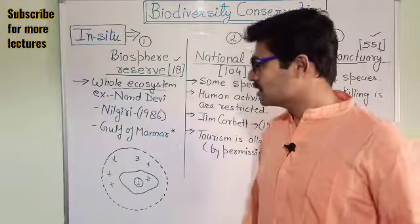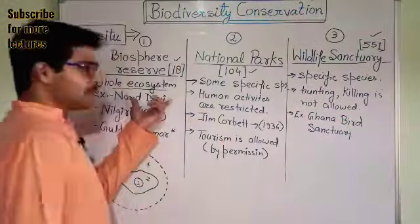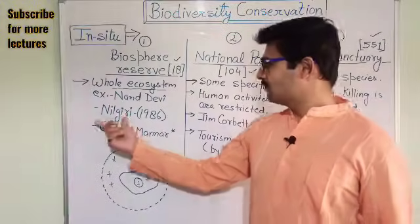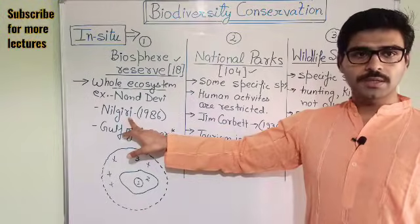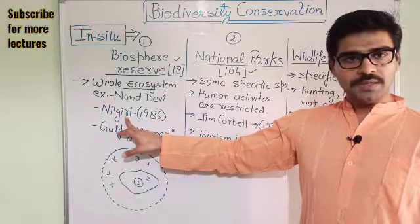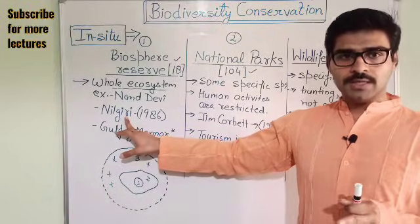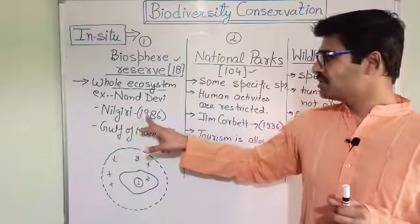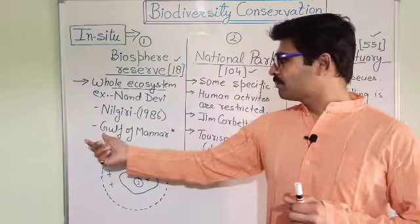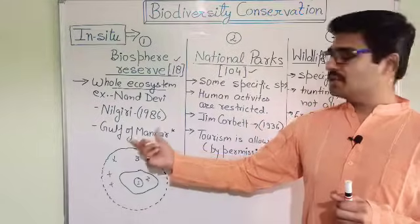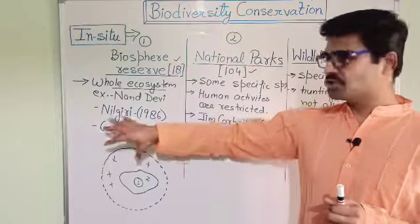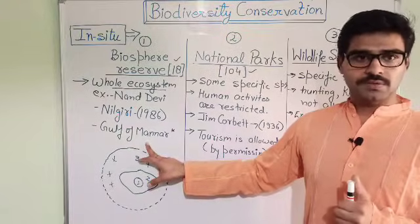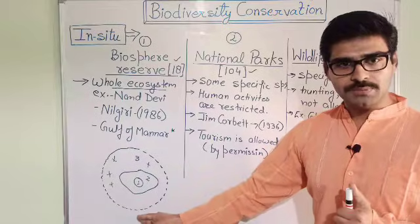In India, we have 18 biosphere reserves. For example, Nanda Devi Biosphere Reserve in Uttarakhand. The first biosphere reserve of India is Nilgiri Biosphere Reserve, situated at the transition boundary between Karnataka, Tamil Nadu, and Kerala — established in 1986. Another example is Gulf of Mannar, which is the largest biosphere reserve of India, situated between Tamil Nadu and Sri Lanka. This is a marine biosphere reserve.